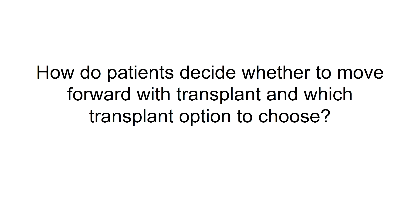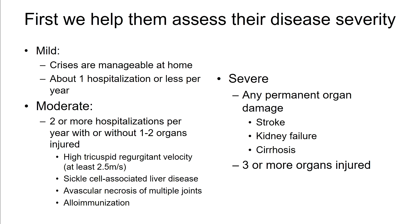I want to talk about how patients are deciding whether or not to move forward with transplant and, if so, which option to choose. First, we help them assess their disease severity. Mild disease is defined as crises manageable at home or about one hospitalization or fewer per year. Moderate disease is two or more hospitalizations per year with or without one to two organ injuries, including elevated tricuspid regurgitant velocity of 2.5 m/s or higher, sickle cell-associated liver disease, avascular necrosis of multiple joints, and alloimmunization. Severe disease is any permanent organ damage including stroke, kidney failure, or cirrhosis, or three or more organs injured.